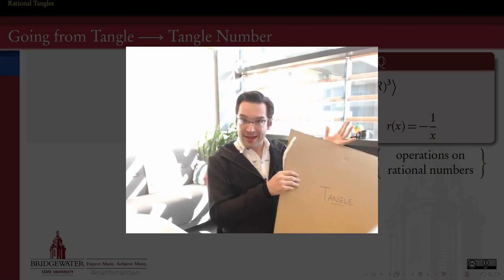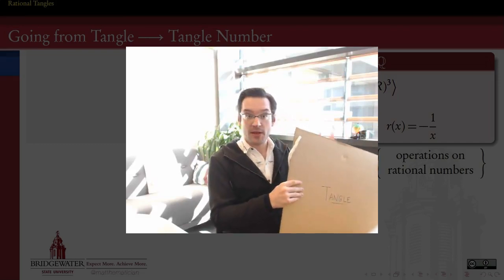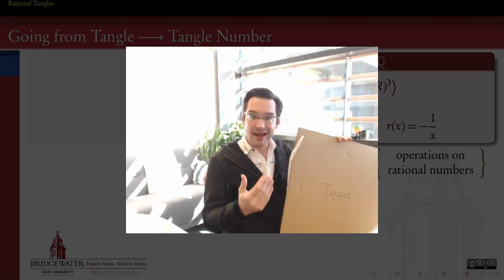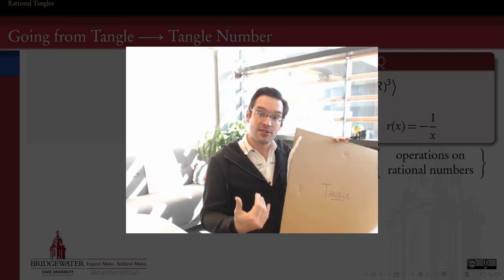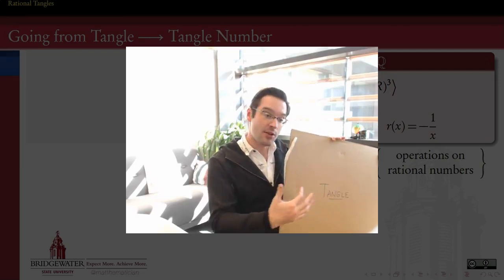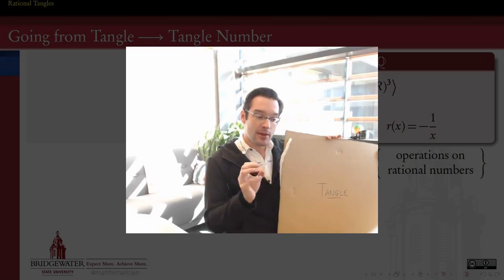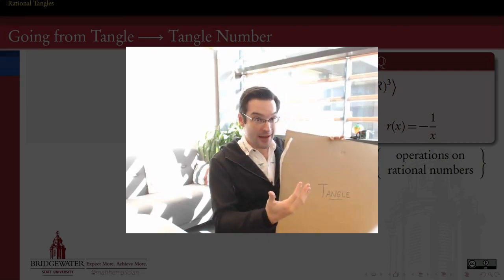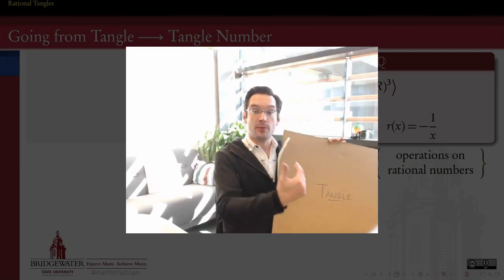So what we want to do next is to think about tangles in a different way. Instead of thinking of them as being built out of a series of geometric operations, we'd like to be able to see tangles as being built out of a set of arithmetic operations — additions and multiplications — in a way that has a predictable effect on the tangle number, and that will also give us a recipe for going the other direction.